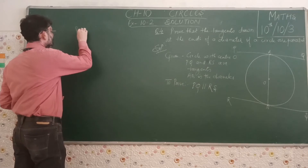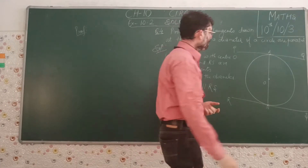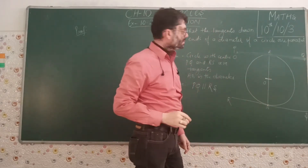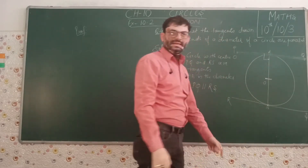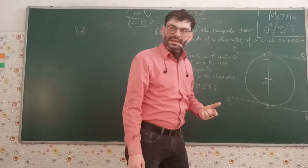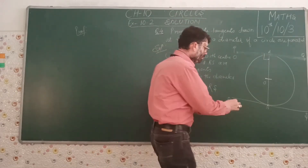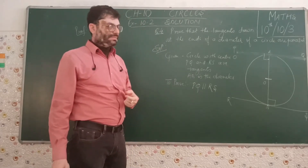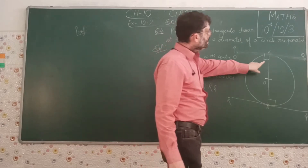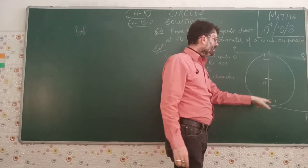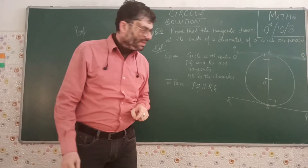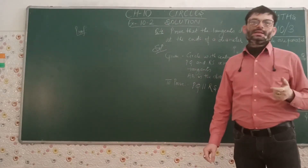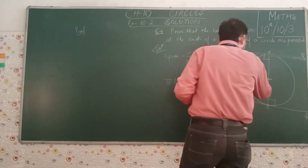Since angle OAP and angle OBS are both 90 degrees and they form a pair of alternate interior angles between lines PQ and RS with transversal AB, and we know by theorem that if alternate interior angles between two lines are equal then the two lines are parallel, we can say PQ is parallel to RS.